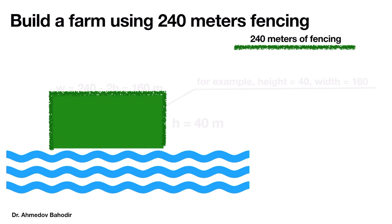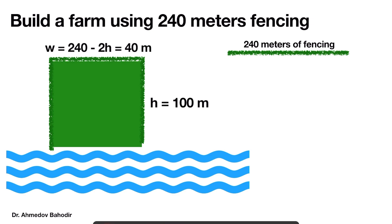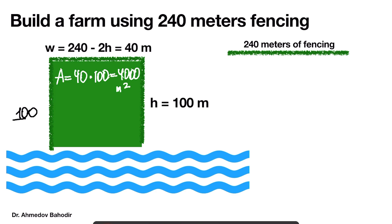The farmer can choose the dimensions of this field differently. He might choose the height to be equal to 100 meters and the width to be equal to 40 meters. In this case, the area is going to be 40 times 100, which is equal to 4000 square meters.